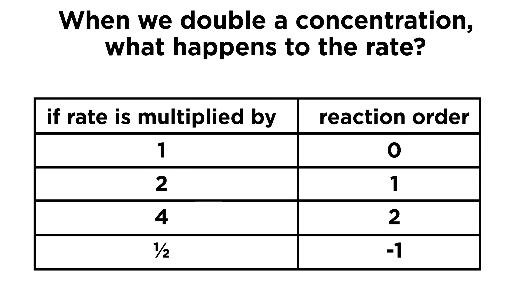We can determine the reaction order for each reactant this way. If we double a concentration, the impact on the rate tells us the order with respect to that substance. If the rate doesn't change it's zero order, if it doubles it's first order, quadruples second order, and if it's cut in half then it's an order of negative one.